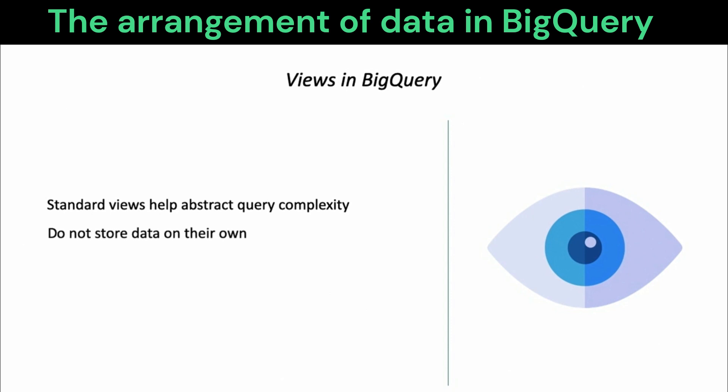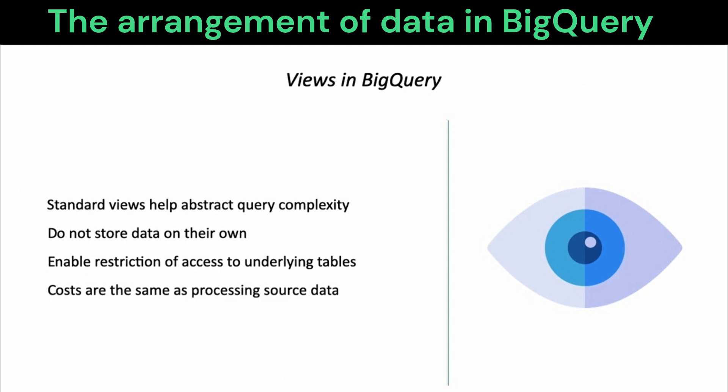Importantly, views in BigQuery do not store any data on their own. They are in essence layers of abstraction between a user and the underlying tables. Beyond that, it is also possible to assign permissions at the view level without granting users direct access to the underlying tables.